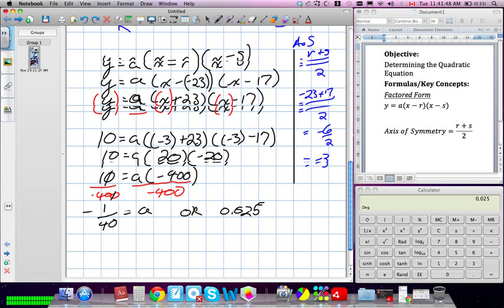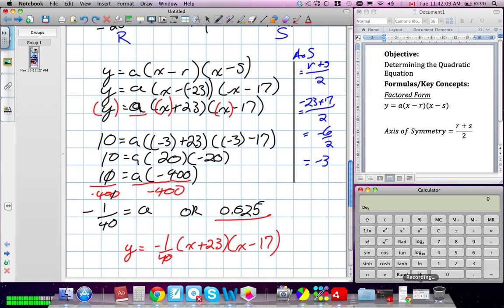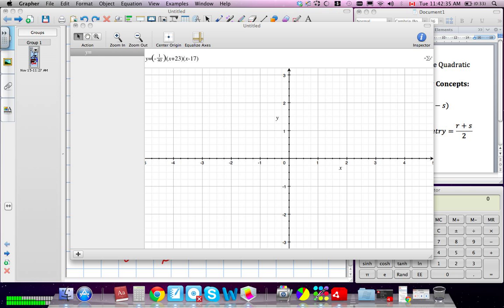So, for the equation of this, when we write it in our factored form, y equals, as a fraction, negative 1 over 40 times x plus 23 times x minus 17. Or, you could have written the fraction as a decimal for the A value. And that would have been fine. Let's double check this by graphing it to make sure we have the right answer.